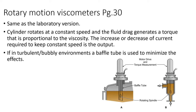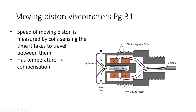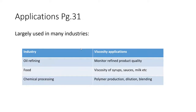The moving piston viscometer: fluid flows in and a piston moves back and forth. The speed of the moving piston is measured by coils sensing the time it takes to travel between them — similar to the ball prover in flow measurement. It has temperature compensation. If viscosity is low, the piston moves quickly; if viscosity is high, it moves slowly.